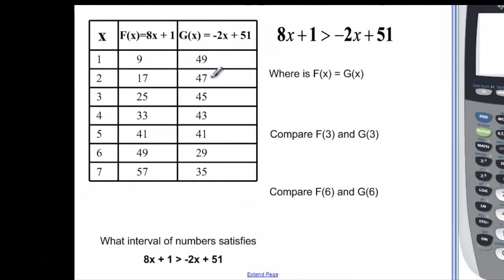Let's look at some examples that are from a table. So in this example I'm going to kind of lead you to where it is. So where is f of x equal to g of x? Well if you look at the table when the y values are the same then I know that it's equal. So we would say that they're equal at x equals 5.